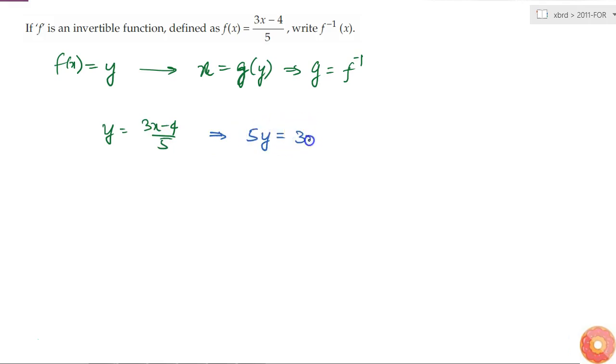If I take this 4 to the other side, then 5y minus 4 is equal to 3x. And if I take this 3 to the denominator, then I get (5y minus 4)/3 is equal to x.